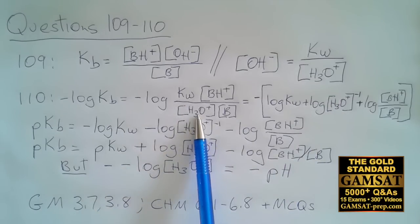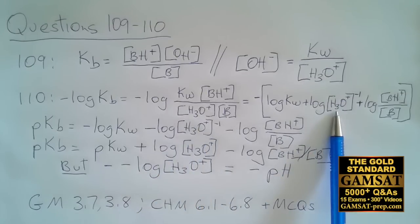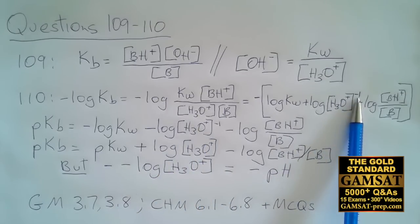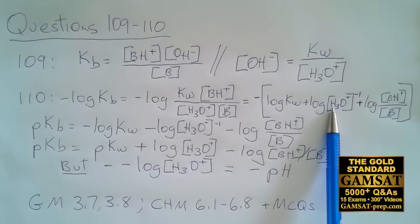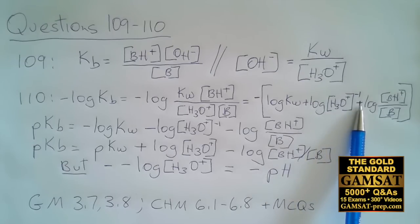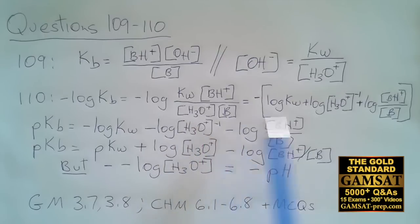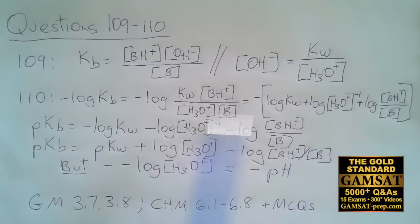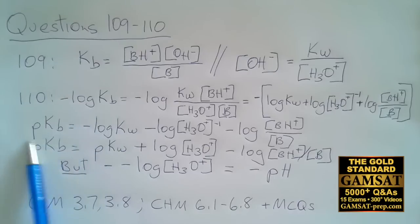Because H3O+ is in the denominator, it's 1 over H3O+. Another way to write that is H3O+ to the exponent minus 1, plus what is left over.